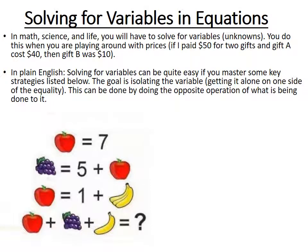Here's a famous problem you might see on Facebook where people comment and try to solve it. You're given a series of pictures and numbers and have to solve for the final series. When you do this, you're actually solving for variables. For example, you know the apple equals seven. So five plus seven equals the bunch of grapes, meaning the grapes equal twelve.